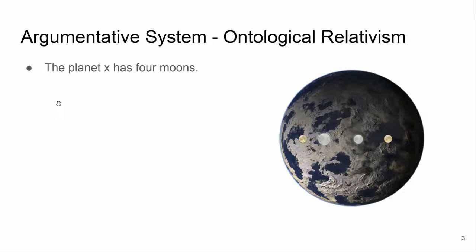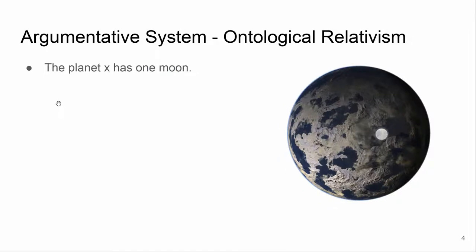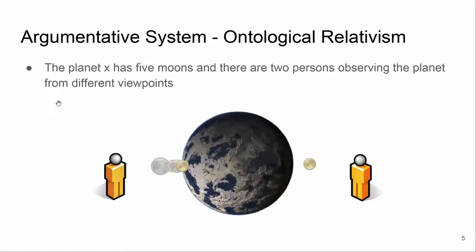To introduce my argumentative system, I want to describe a philosophical concept: ontological relativism, which is the background of my system. If we observe this picture, we can say that this is a planet with four moons. From another perspective, someone else observing the same planet might see only one moon. Observing the same planet at the same time from yet another point of view, we might see five moons, with two individuals observing the same object.